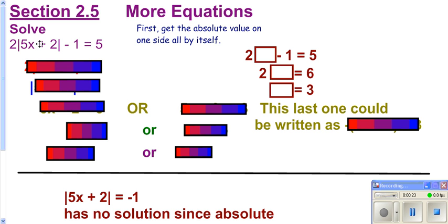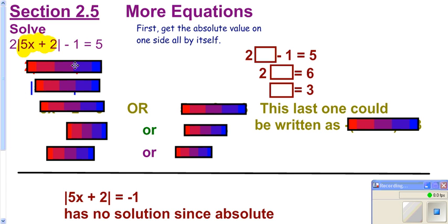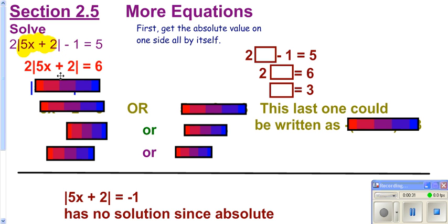We can do the same idea here. We want to get our absolute value — this stuff right here — by itself. So you've got to get rid of your 1 by adding it. Now you've got to get rid of your 2, so you divide by 2.